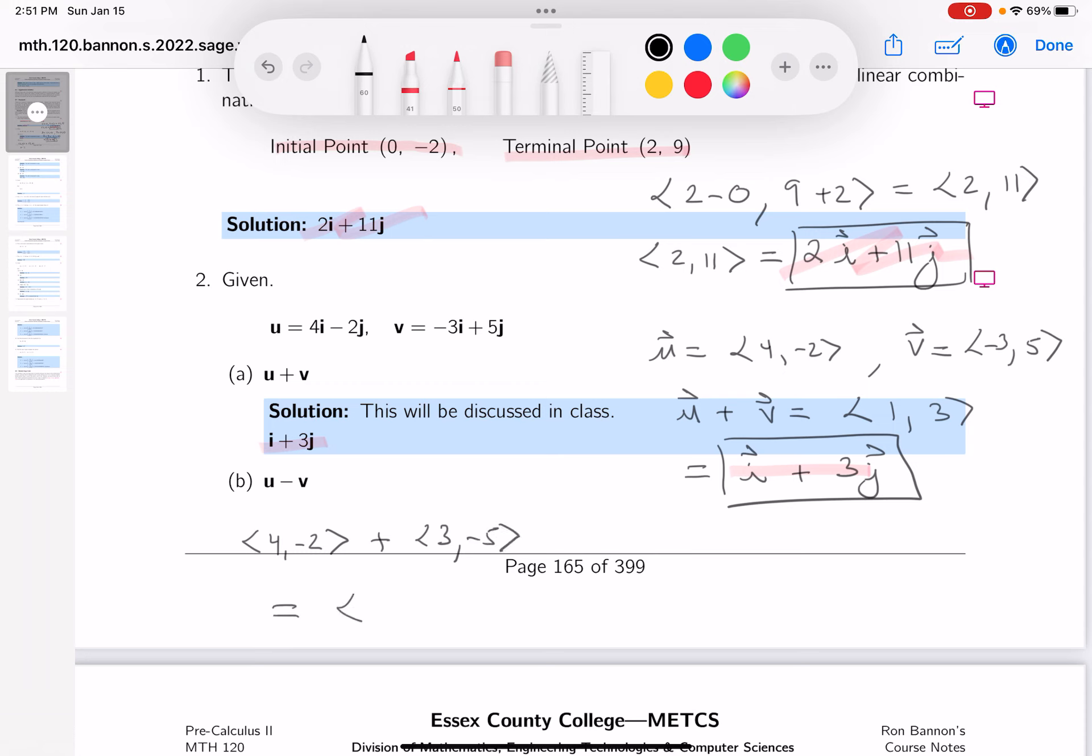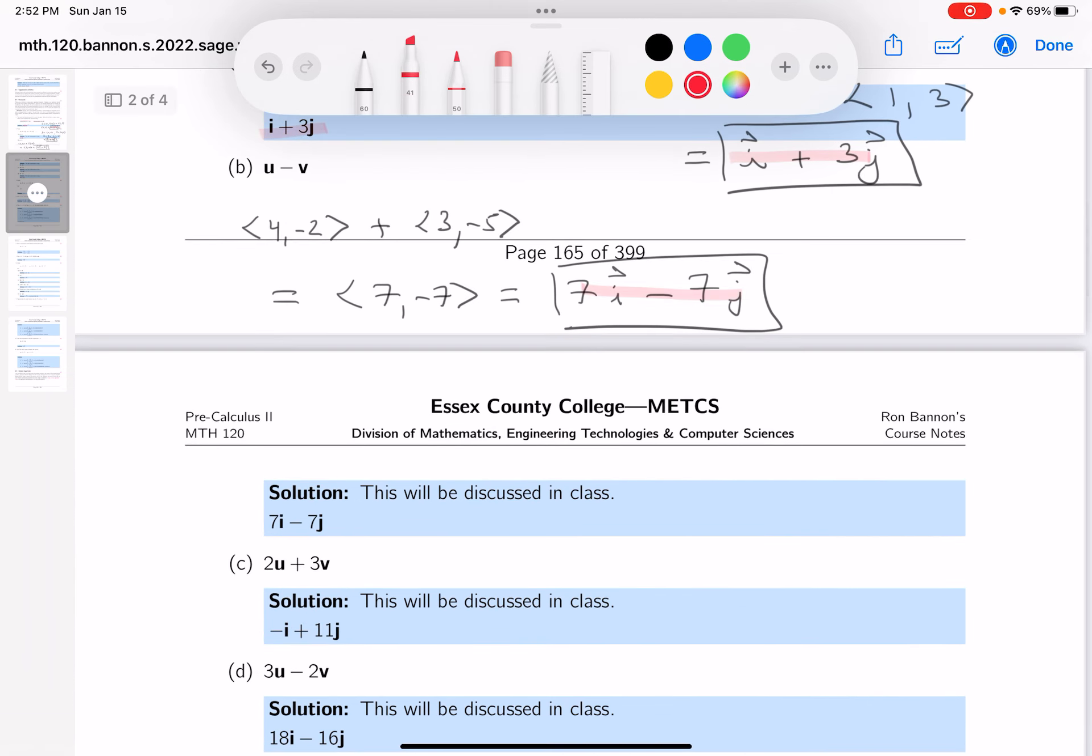Add the components together. 4 plus 3 is 7, and -2 minus 5 is -7. In ij notation, that's 7i - 7j. Let's look at the key and see how we've done. I'm seeing it right over here.